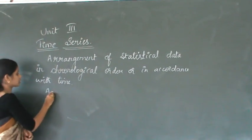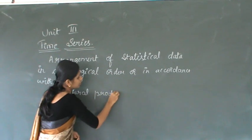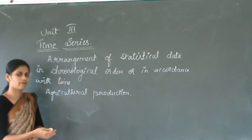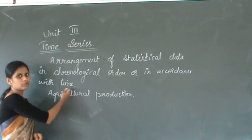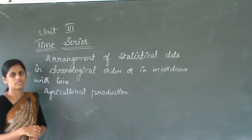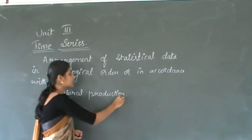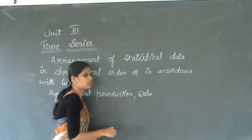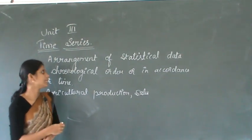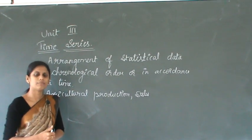For example, agricultural production of an area. If you are going to see what is the production of rice in each year — for example, the rice production in 2000, 2001, 2002, 2003 — if you record that information, it is called time series. Another example is sales of a company: what is the sale of a product in different time periods? Likewise, population of a country, and import and export of a country — all these are examples of time series.